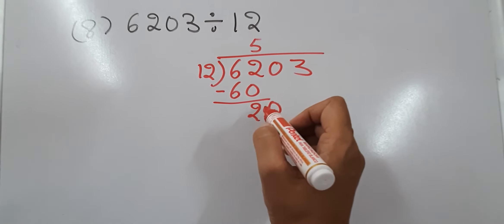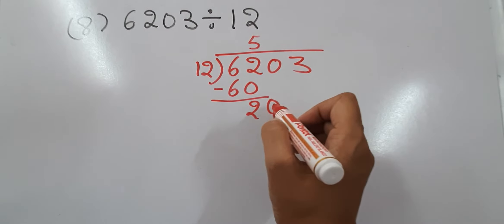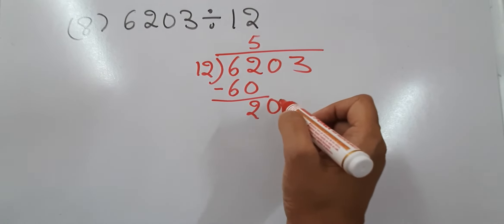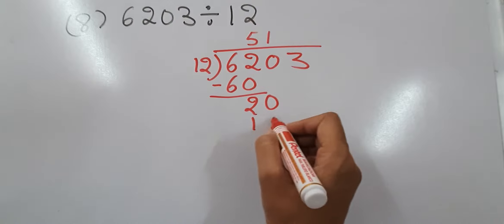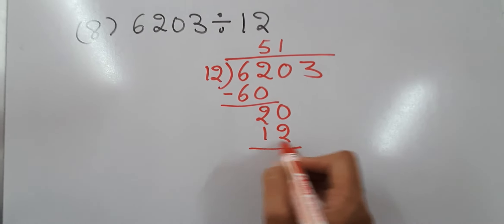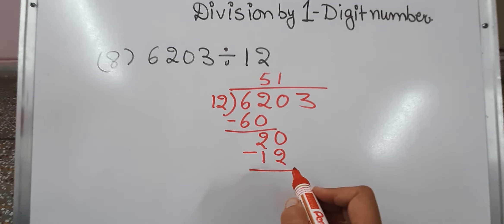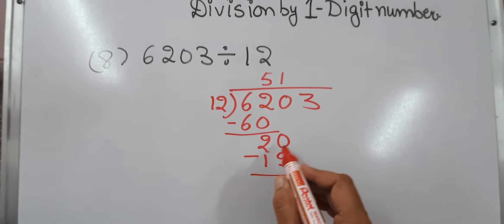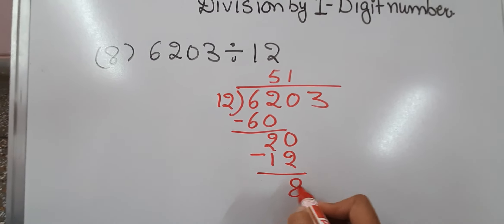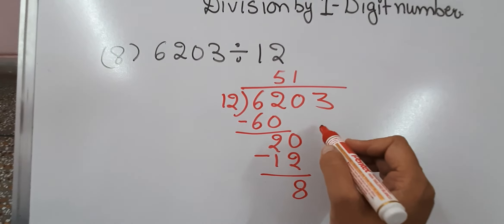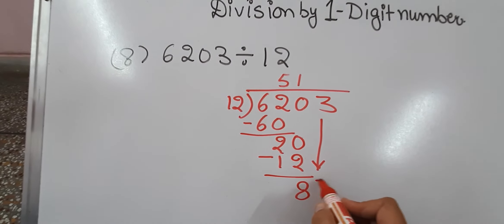In the table of 12: 12×1 is 12, 12×2 is 24 — 24 is higher than 20. So we write 12×1 is 12. Now we subtract. This gives us 8. And this 3 is going to come down.